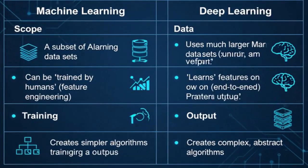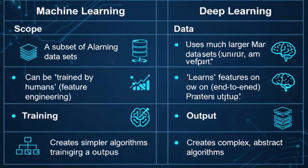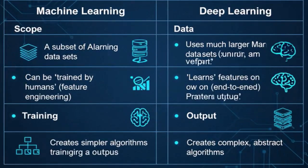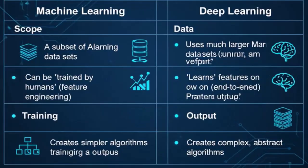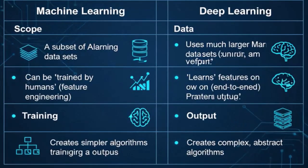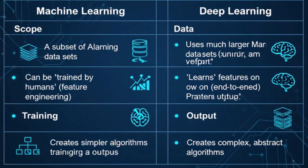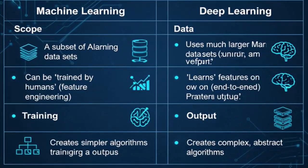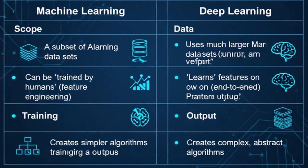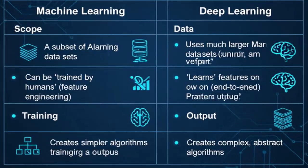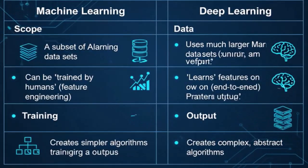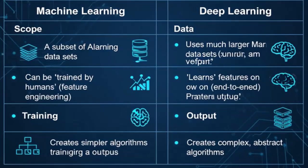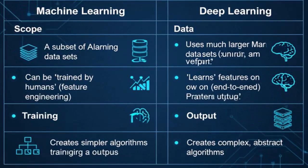For the output, machine learning tends to produce simpler, more interpretable algorithms or models — you can often trace back how a decision was made. Deep learning, due to its complexity and numerous layers, creates highly complex and abstract algorithms. While incredibly powerful, they're often considered black boxes because it's harder to understand the exact reasoning path they took.